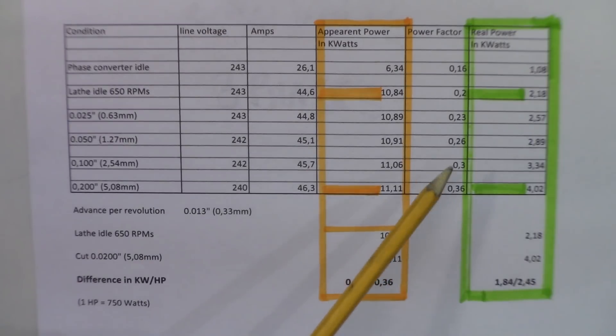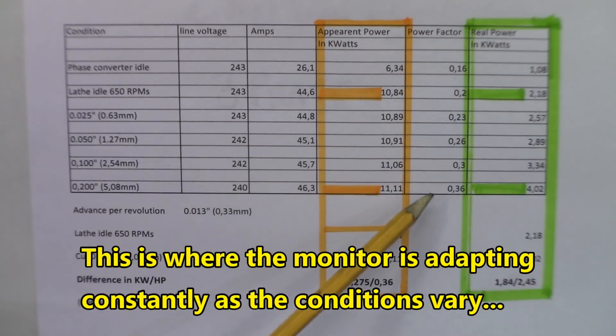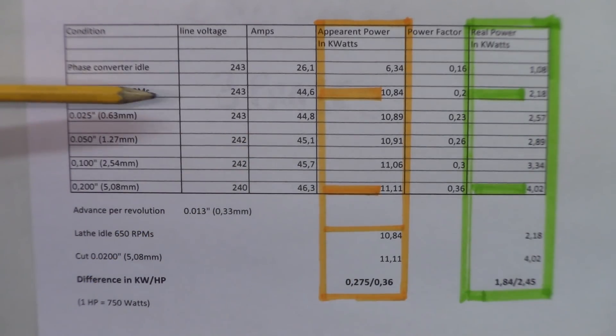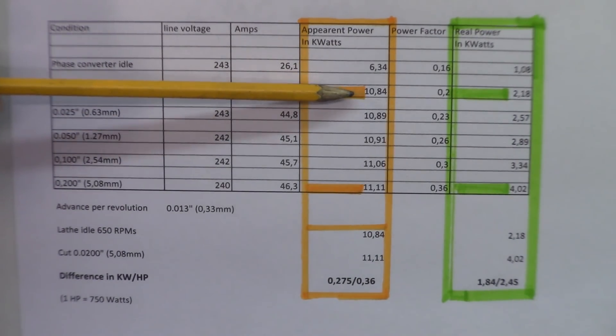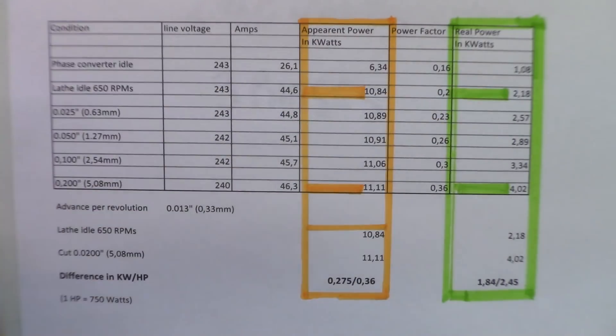This means that if you make the difference, the lathe is idling right there at 10 kilowatts apparent power. And we're taking a 200 thousandths cut, which is a 5 millimeter cut, and the figures will be like 11.1 kilowatt. So if you make the difference between those two figures here, I even gave you a HP figure too, but the first number, difference in kilowatts and HP, the first one here is the number of kilowatts difference between the situation where the lathe is idling and the lathe is taking a 200 thousandths cut or 5 millimeter cut.